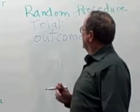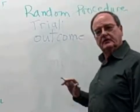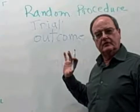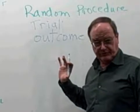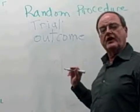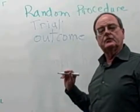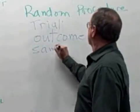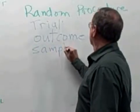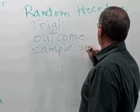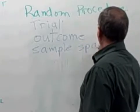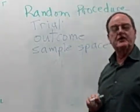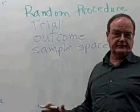When we discuss all the possible outcomes of a random procedure, then we're talking about what's called the 'sample space.' The sample space is simply a list of all the possible outcomes.